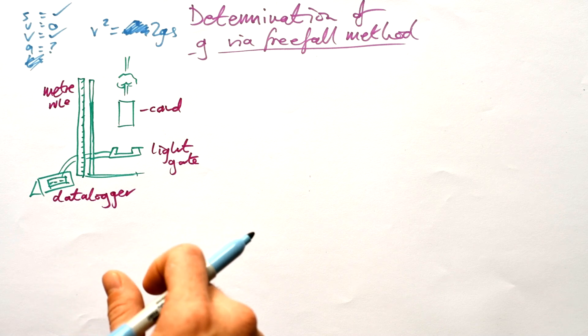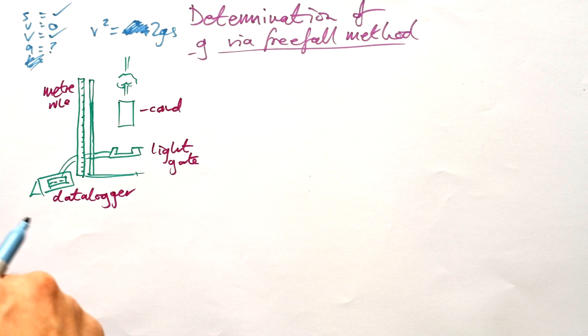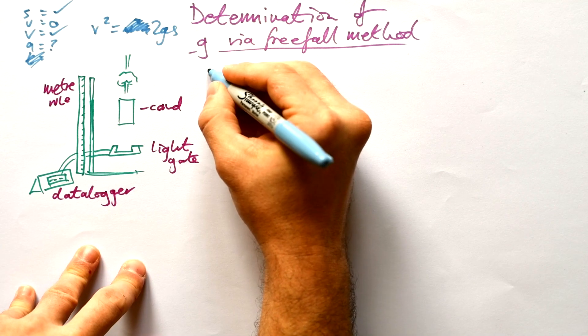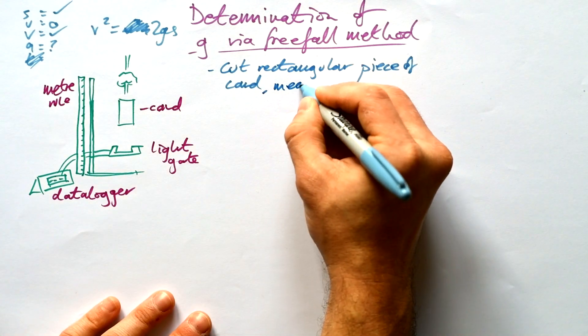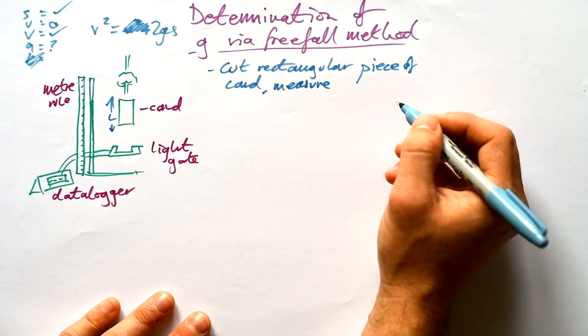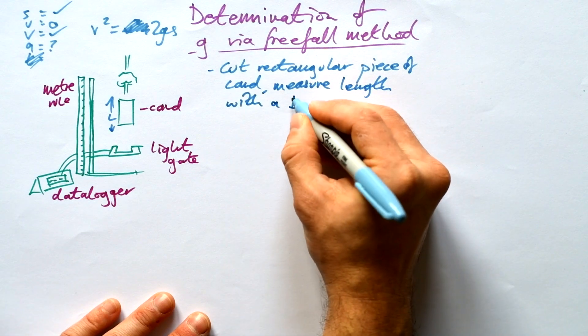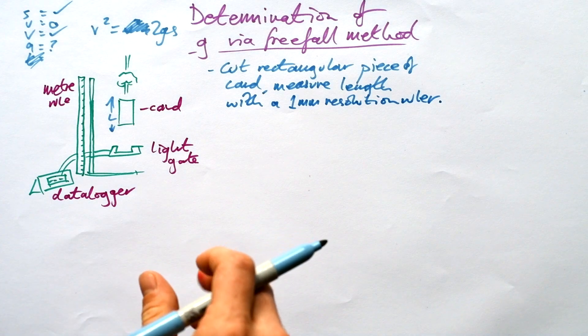So while this seems like a fairly simple experiment, and it is, there's lots of things to think about when it comes to talking about accuracy and sources of uncertainty. First thing we want to do is cut that rectangular piece of card and measure the length of that, that is the length that it's actually going to be falling through with. And we can do that with a one millimeter resolution ruler. Could use a vernier caliper, not much point, we don't need to go to that level of precision.